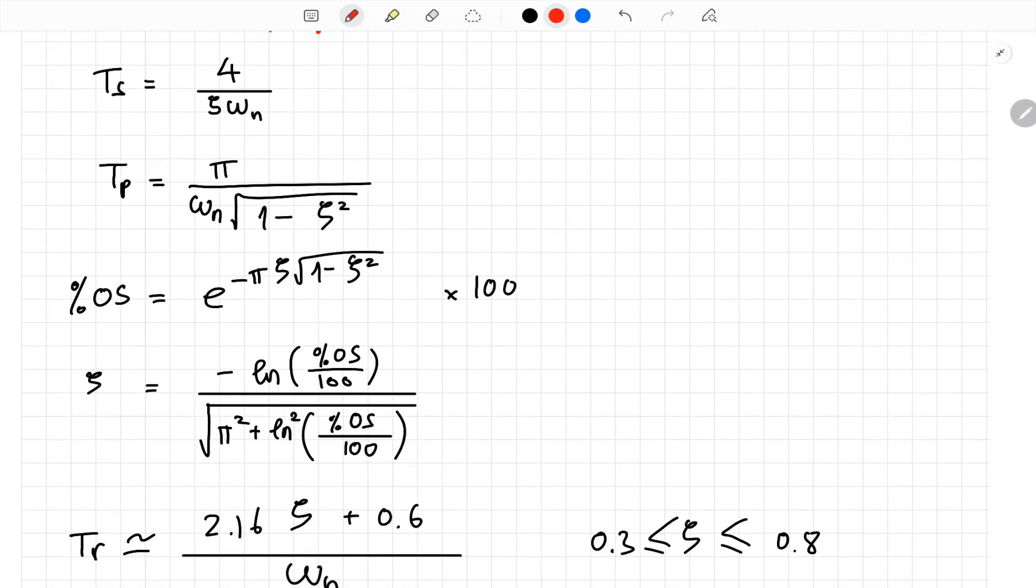The settling time, ts, is equal to 4 over zeta times omega_n. The peak time, tp, is equal to pi over omega_n times square root of 1 minus zeta square. Percentage overshoot, %OS, is equal to exponential of negative pi times zeta over square root of 1 minus zeta square, everything times 100.